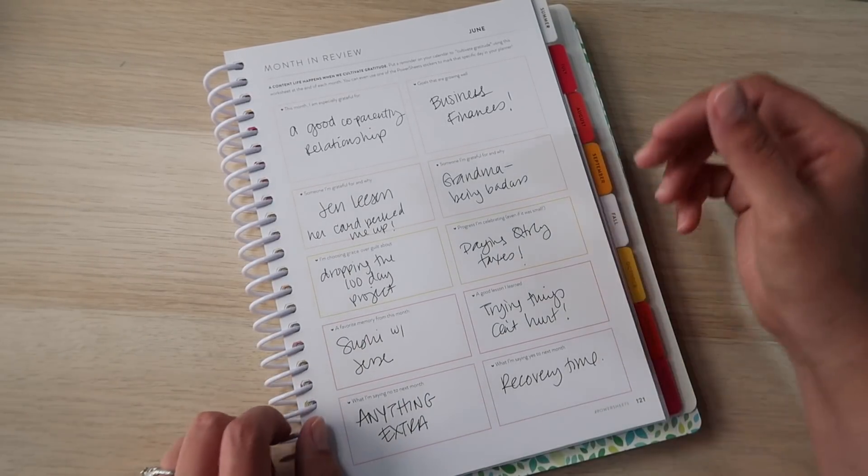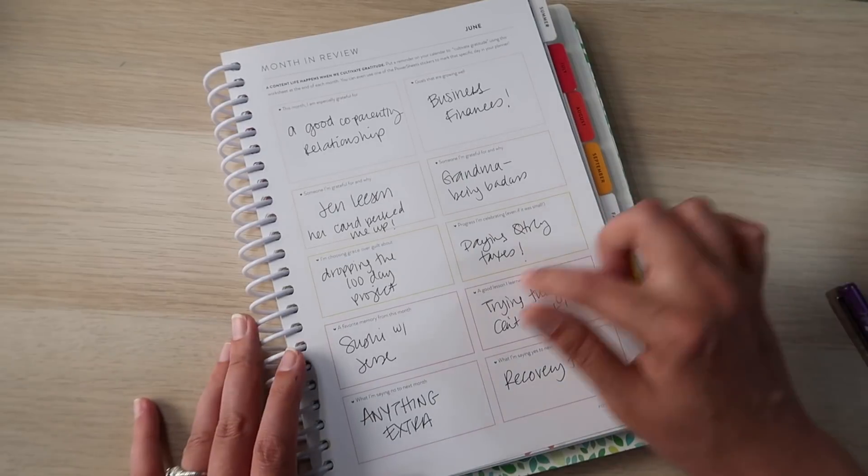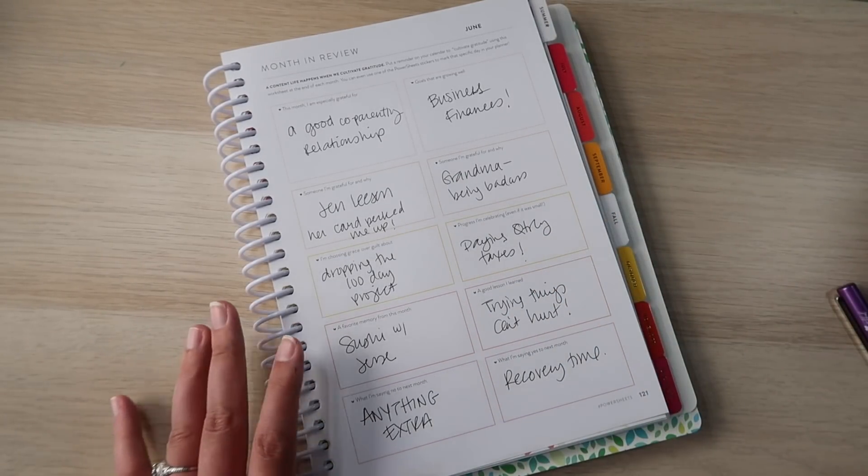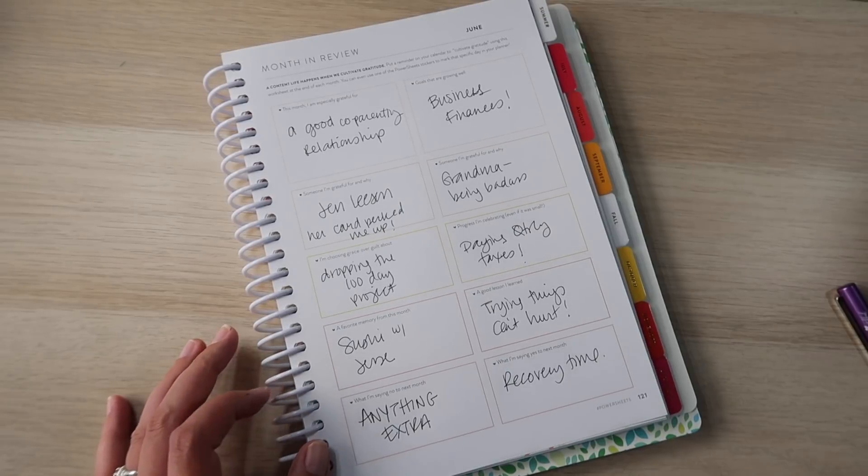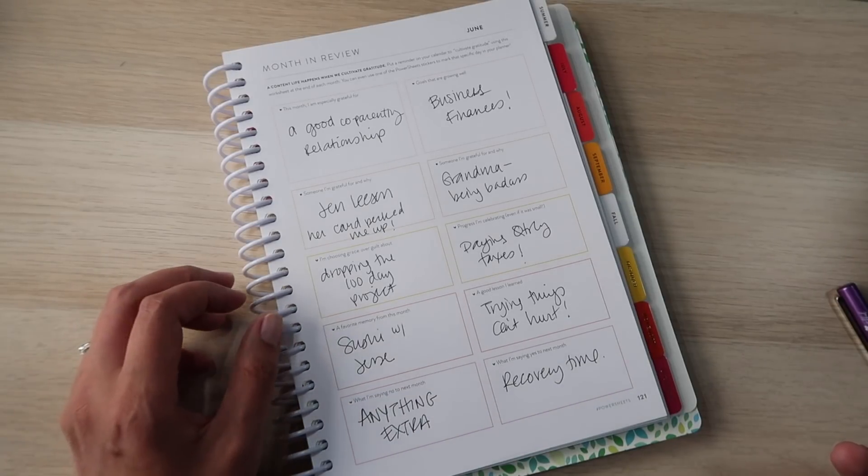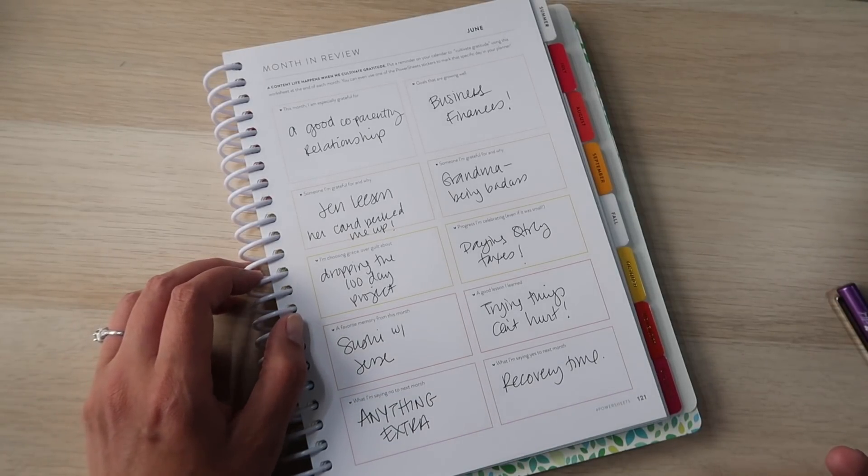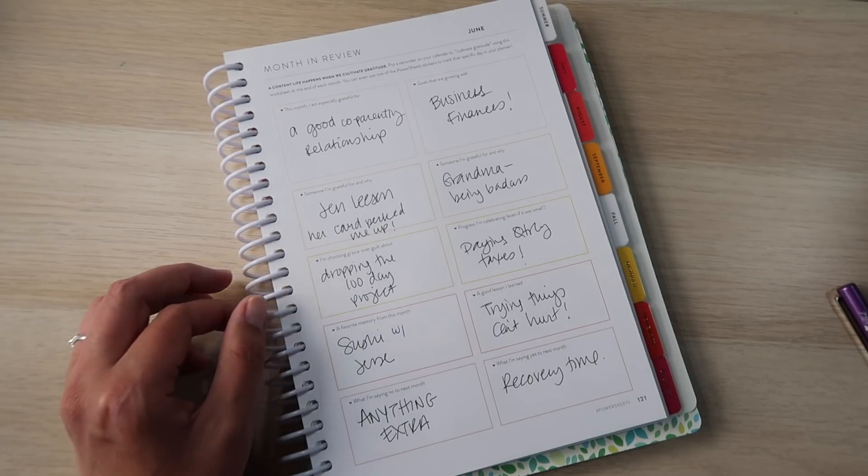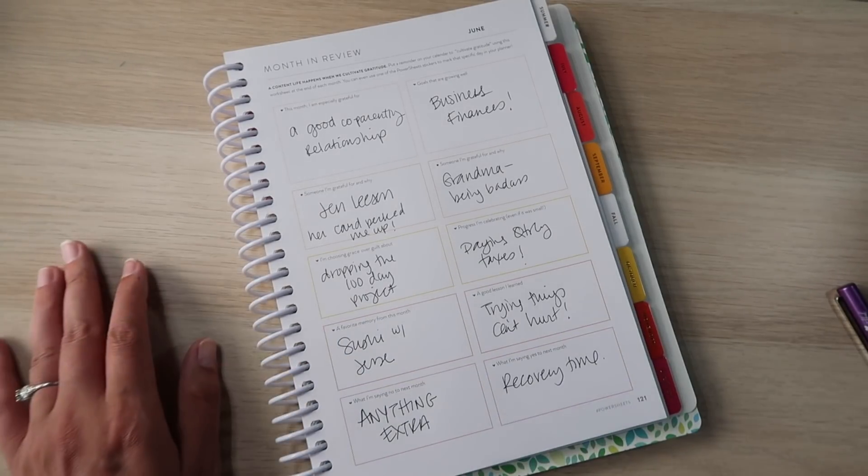I'm choosing grace over guilt about dropping the 100 day project. Like I already said, I already mentioned the taxes. A favorite memory from this month is having sushi with Jessie to celebrate my hitting 50k subscribers on YouTube, as well as some other things. We just hadn't been able to sit and just be adults with each other for a while. And it felt really good. And it was just nice to get out. We went and had a drink at a bar like grownups beforehand. And it was nice.